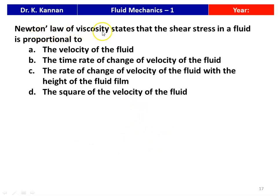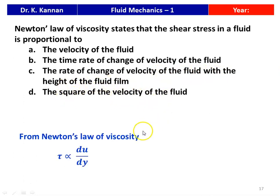Next question: Newton's law of viscosity states that the shear stress in the fluid is proportional to — (A) the velocity, (B) the time rate of change of velocity, (C) the rate of change of velocity with height of the fluid film, or (D) the square root of velocity. The answer is (C): shear stress is proportional to dU/dY, where dU is the change of velocity and dY is the thickness of the fluid film.